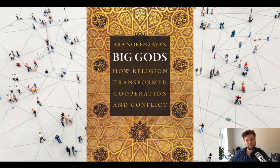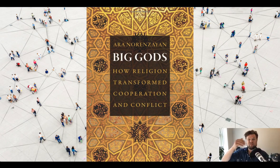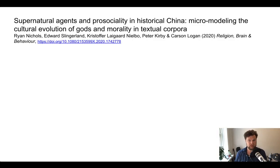An answer that has become popular in evolutionary anthropology is what was described in a book called Big Gods. The idea is that religion was part of the secret sauce that made this possible — specifically beliefs and practices related to supernatural agents that would monitor people all the time, punishing you if you did the wrong thing and rewarding you if you did the right thing. Maybe that was part of the trick: a culturally evolved mechanism that helped enable large societies. Make of that what you will.